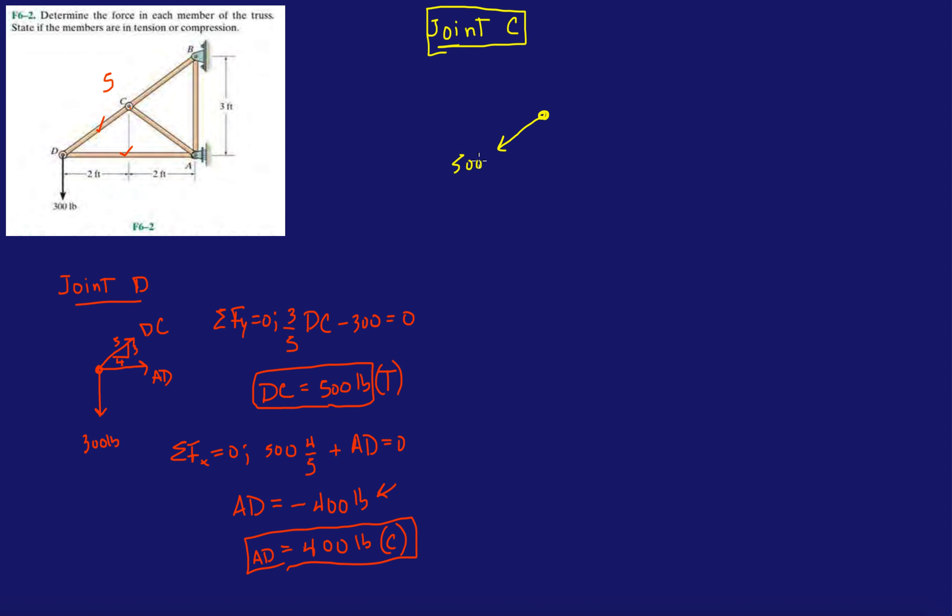So, 500 pounds. Then we have BC coinciding with that, with the same, you know, co-linear.